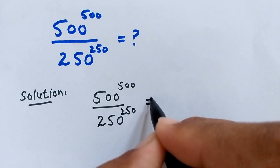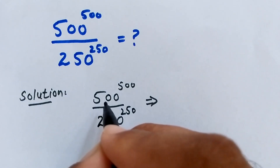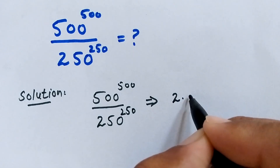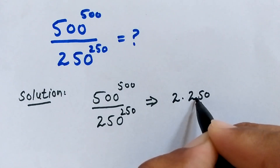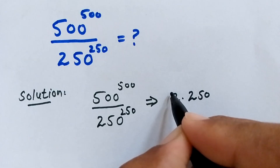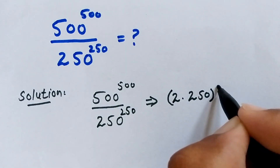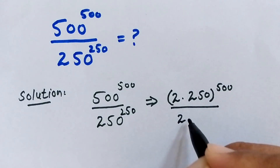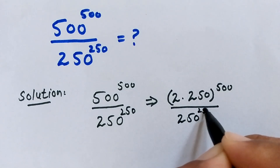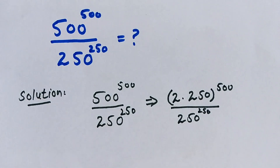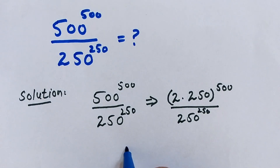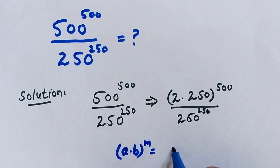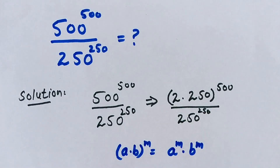We know that 500 is also equal to 2 times 250. So we rewrite the expression as (2 times 250) to the power of 500, divided by 250 to the power of 250. We apply the rule: (a times b) to the power of m equals a to the power of m times b to the power of m.